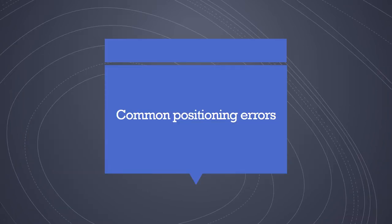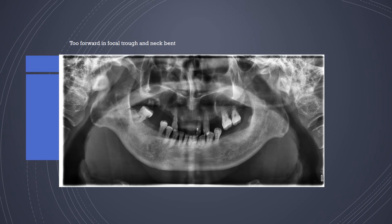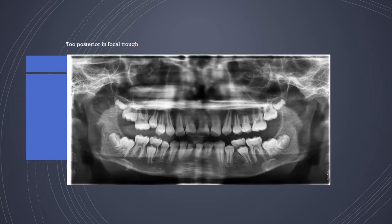Now let us look at some common positioning errors. If the patient is placed too far forward in the focal trough with the neck bent, you get an exaggerated smile line and the gonial angles pop out. If the patient is positioned too far posteriorly, you get flattened, widened teeth in the center and a flattened smile line, with the central area blurred because it is out of focus and not in the focal trough.